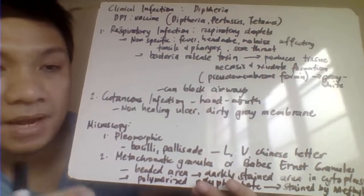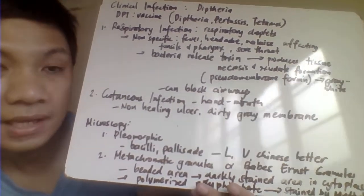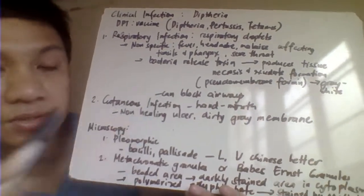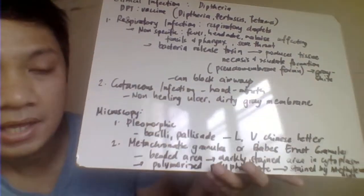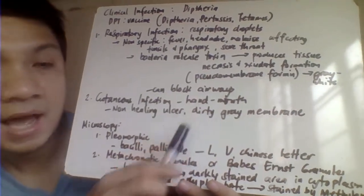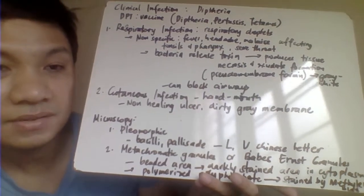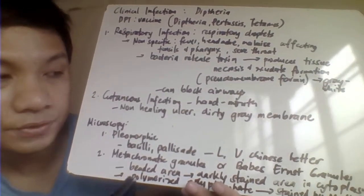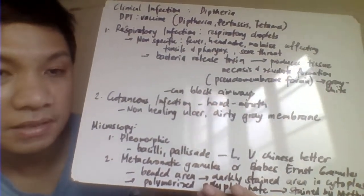The pseudomembrane thickens, turning gray-white. In severe manifestation, it can block the airway passage and the patient can die from inability to breathe. The second manifestation is cutaneous or skin infection, transmitted through hand-to-mouth close contact, forming a non-healing ulcer with a dirty gray membrane — which helps identify Corynebacterium diphtheriae.